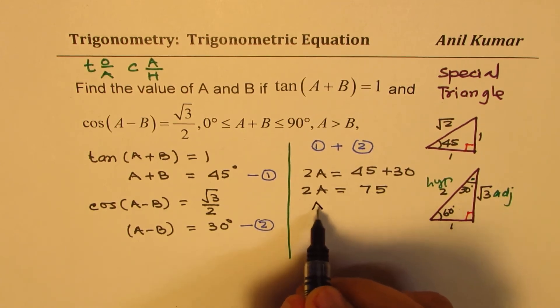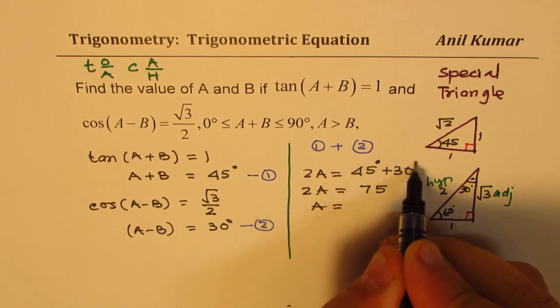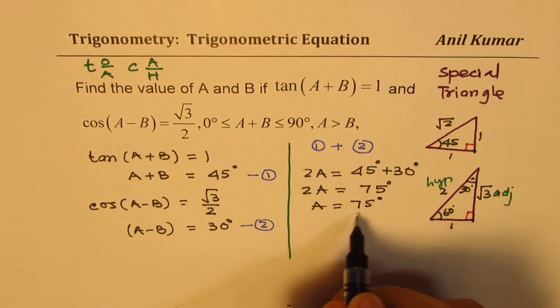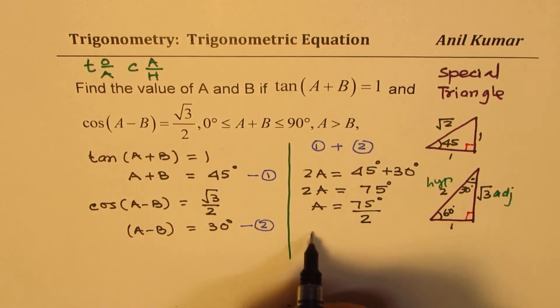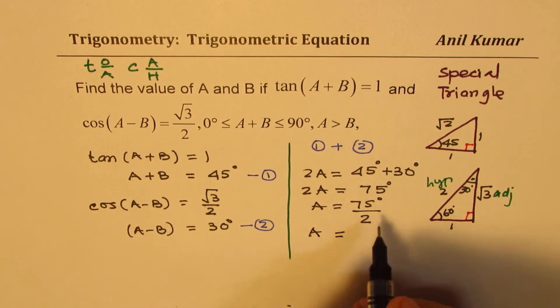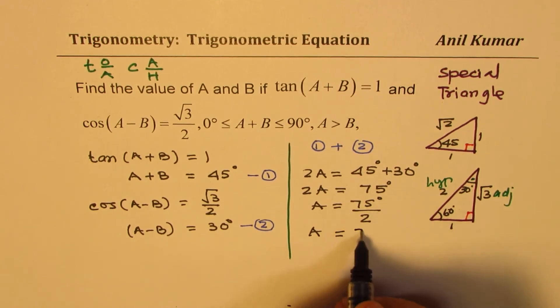So A is equal to—all this is in degrees—75 degrees divided by 2. So that gives us the value of A as 37.5 degrees.